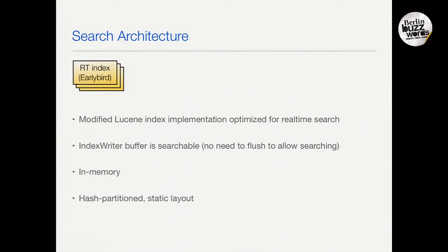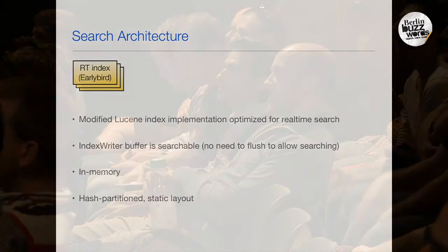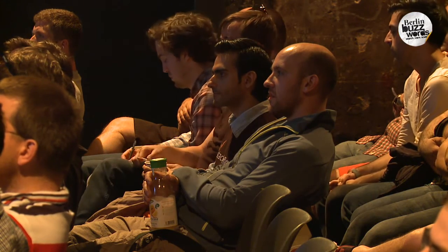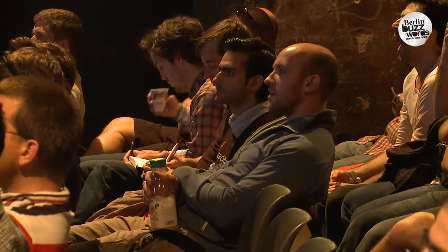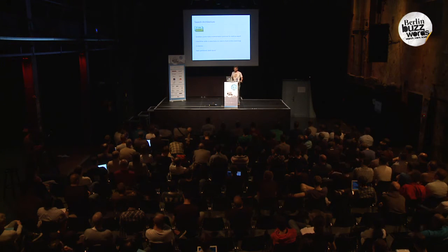Earlybird is a modified Lucene index optimized for real-time search. The key difference is that in Lucene's near real-time feature, every time you want to search the latest documents you have to call flush or commit, which triggers a flush to disk or memory. For very high TPS and QPS, and with very short latency between tweeting and being searchable, that approach doesn't work well. So we changed it so you can append to the same data structure and also search in a lock-free way. The real-time index is fully in memory, covers the last n days, and uses this Earlybird technology.